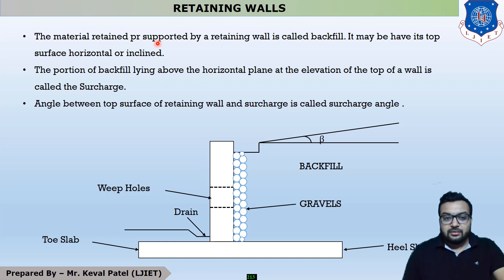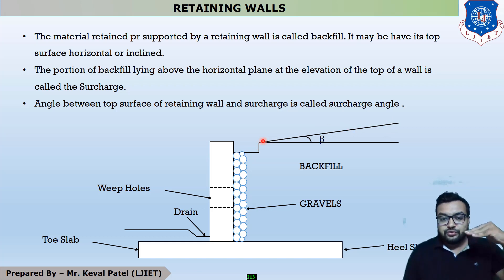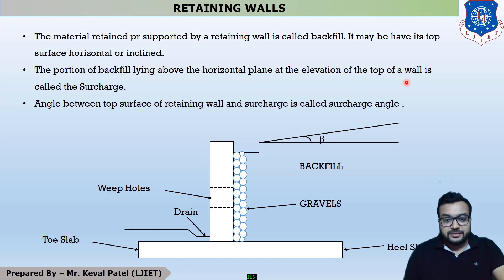The material retained or supported by a retaining wall is called backfill. The soil retained by the vertical portion is called backfill — it may have its top surface horizontal or inclined. The inclined portion over the topmost portion of the retaining wall is called surcharge. The portion of backfill lying above the horizontal plane at the elevation of the top of a wall is called surcharge. The angle between the topmost portion of the retaining wall and the surcharge is called the surcharge angle (beta).